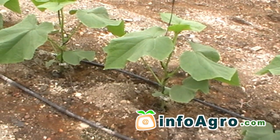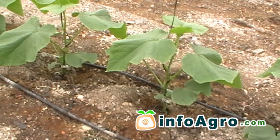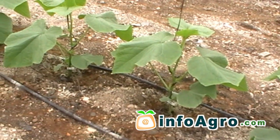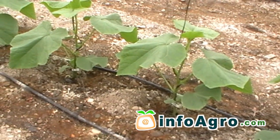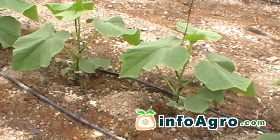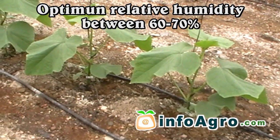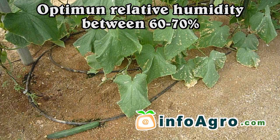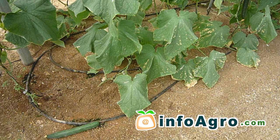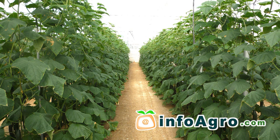A cucumber is a plant that requires high levels of humidity due to the large surface area of its leaves. The optimum relative humidity during the day is 60 to 70 percent and at night between 70 to 90 percent.